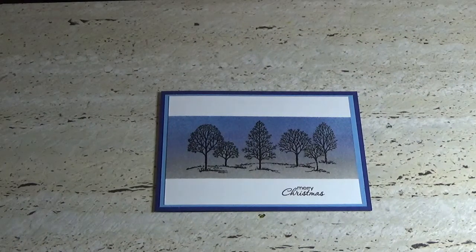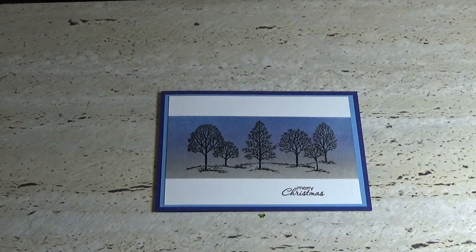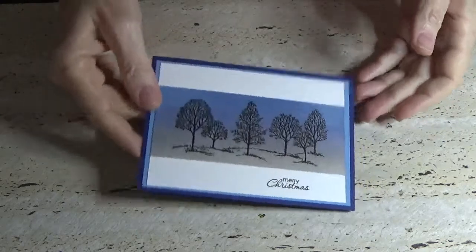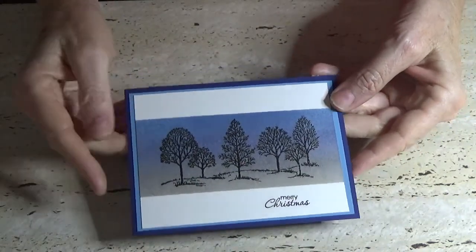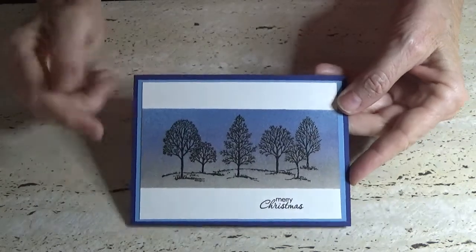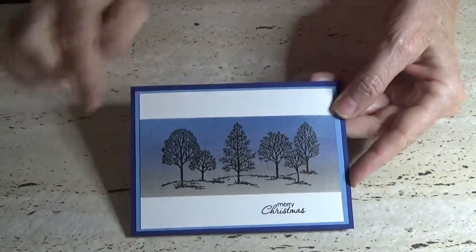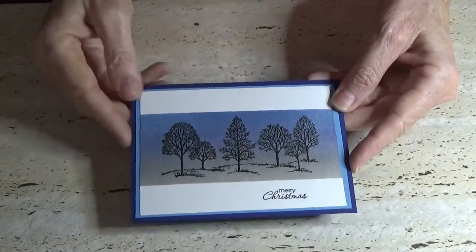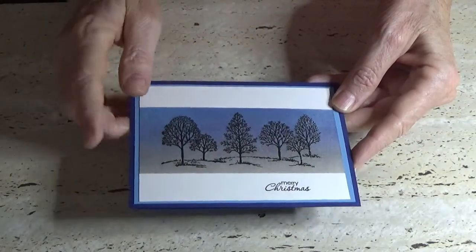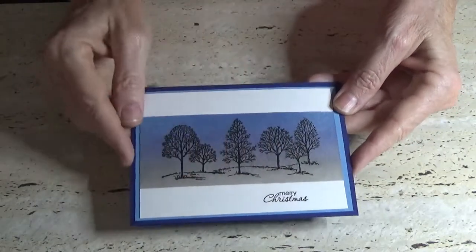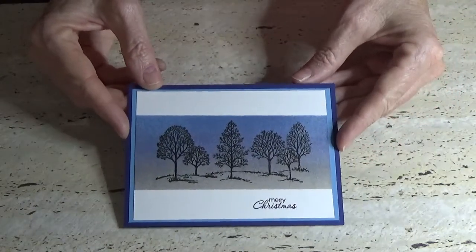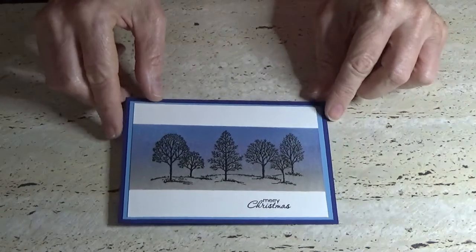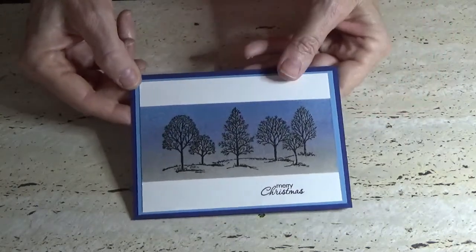Hello everyone, welcome back again to Angela's Craft Room. Today I've got another Christmas card for you and I really liked how the sponging colors turned out in this one. I've used Marina Mist, Wisteria Wonder, and at the bottom here Sahara Sand.